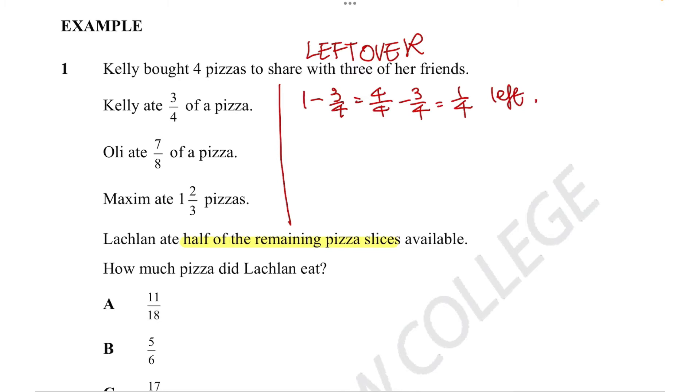For Ollie, he's also eaten one pizza but only ate seven eighths of it. So we are left with one eighth of a pizza. Maxime, it looks like she's actually gone into two pizzas and has eaten one and two thirds of a pizza. So that means we only have one third of a pizza left.